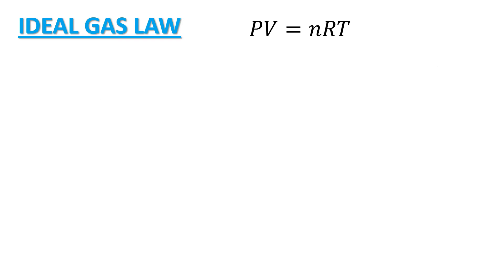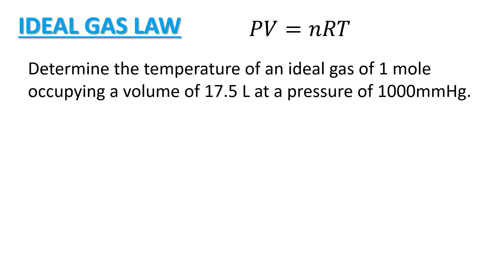And for our last problem, we have, determine the temperature of an ideal gas of 1 mole, occupying a volume of 17.5 liters at a pressure of 1000 mmHg. So, the given are the number of moles of our ideal gas, which is 1 mole, the volume is 17.5 liters, and the given pressure is in terms of mmHg equal to 1000 mmHg.